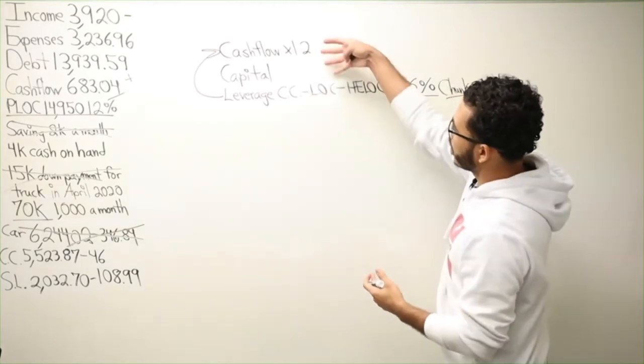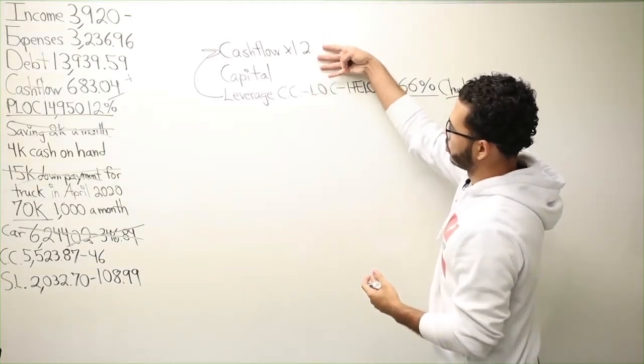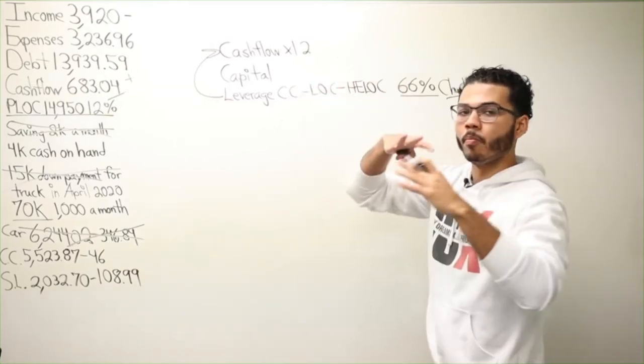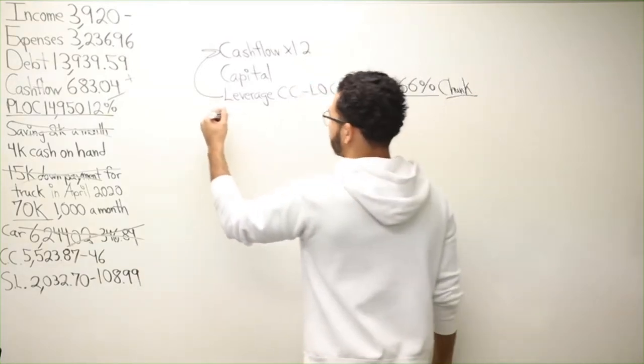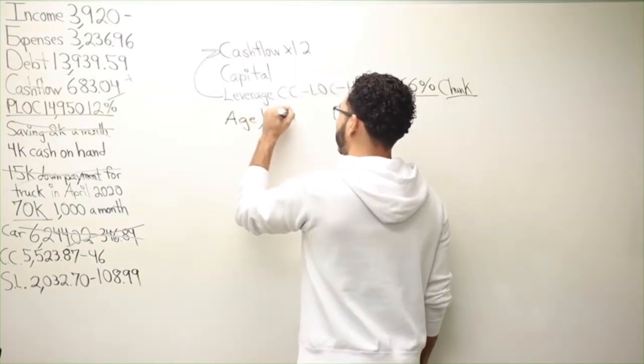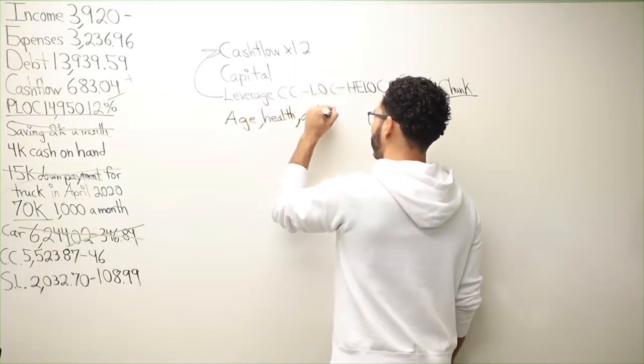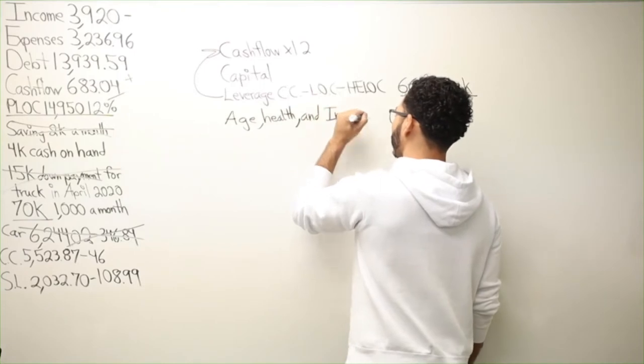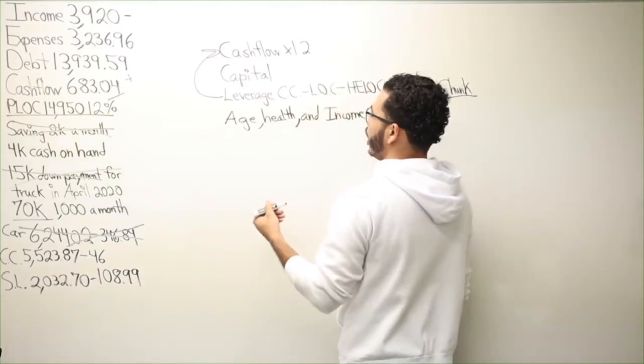Maybe I don't have capital, so I'm looking at these three numbers right here. And then what it all boils down to is your age, health, and income - whatever the insurance company is willing to approve you for.